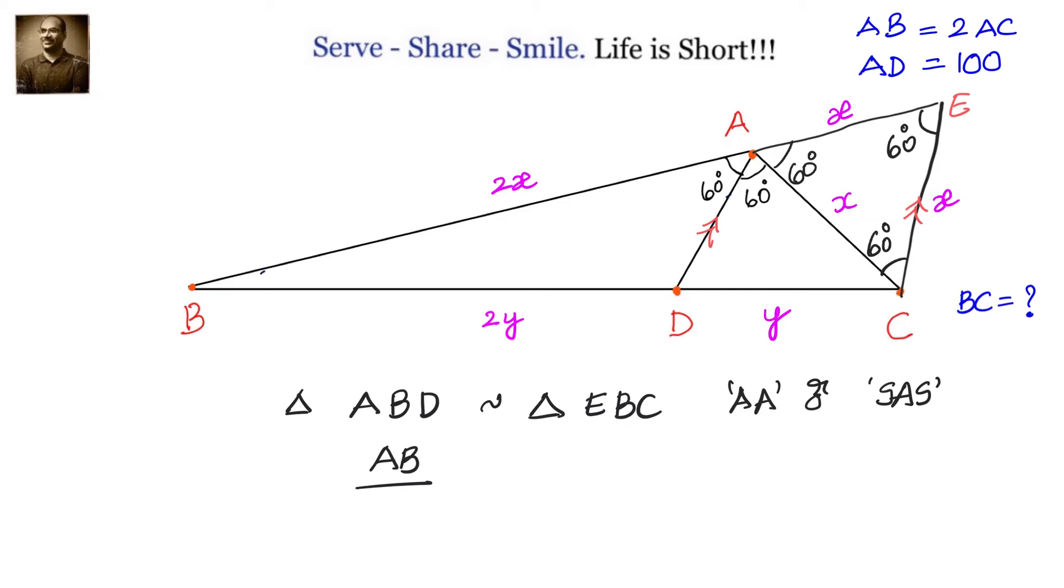So we can write down the corresponding sides which are proportional. AB by EB equals BD by BC equals AD by EC.